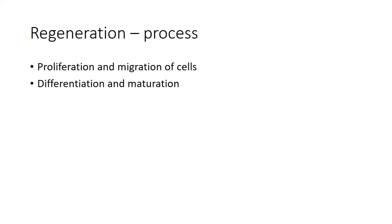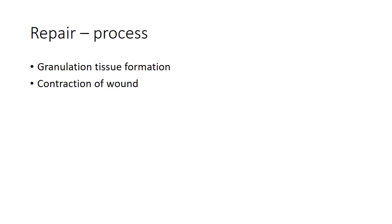The process of regeneration involves two things: one, proliferation and migration of cells to fill the gap, and two, differentiation and maturation of these cells to restore the structure and function of the original tissue. The process of repair also involves two events: one, granulation tissue formation, and two, contraction of the wound.